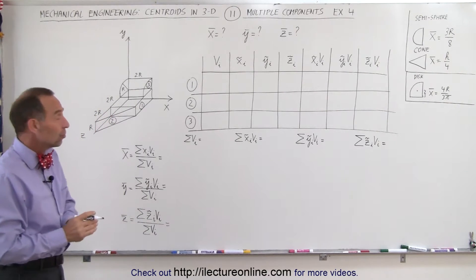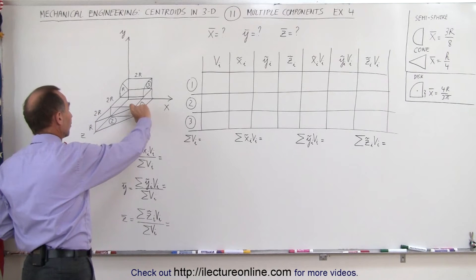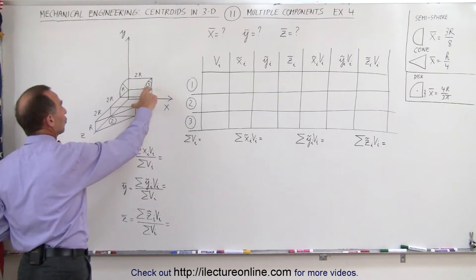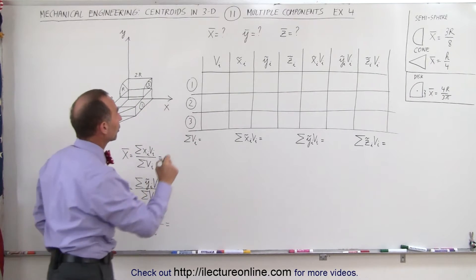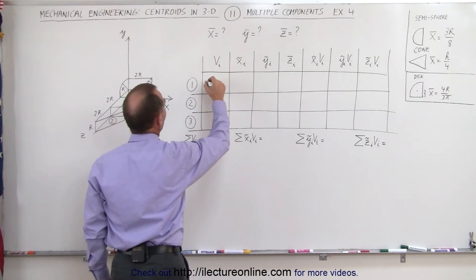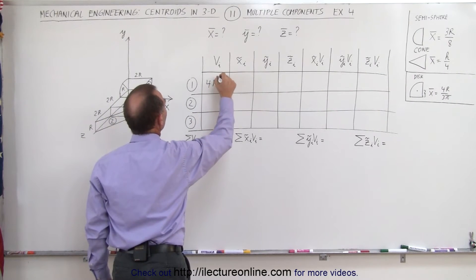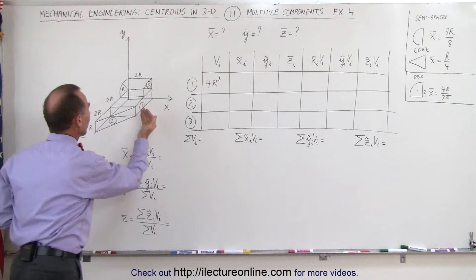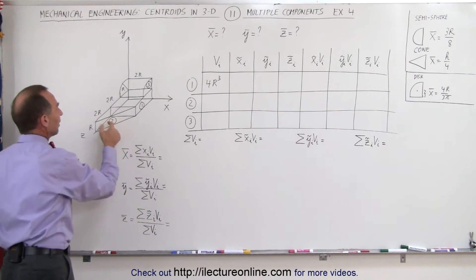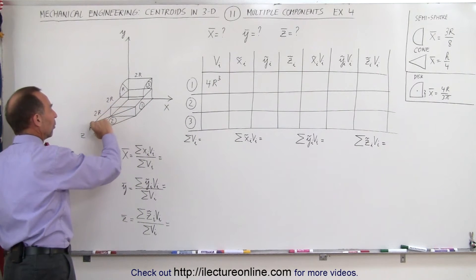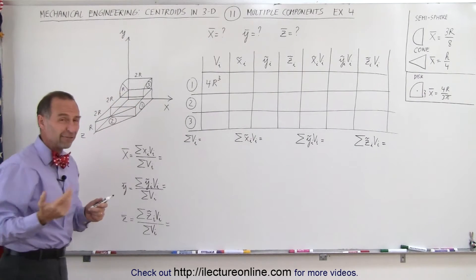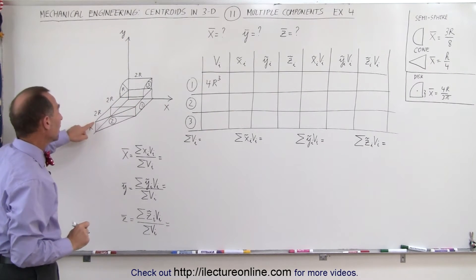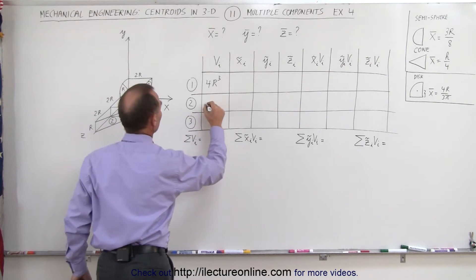For the volume of each: notice that the thickness of all of them is r. The rectangular slab is 2r by 2r, so it would be 2r × 2r × r, giving 4r³ for the volume of object one. Object two is really half of that — it's 2r by 2r, r thick, but sliced in half like a triangle: half the base times the height, giving 2r³.